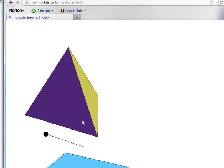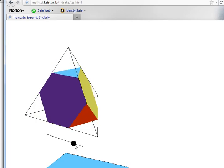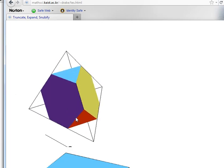In order to truncate properly you take each edge, for example this edge between the purple and the green and divide it in thirds. So this point is going to move to the one third point. This vertex is going to move into the one third point. Here we have the truncated tetrahedron.